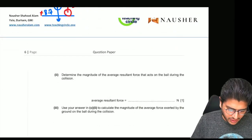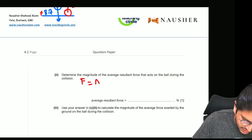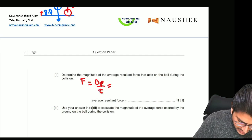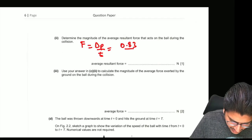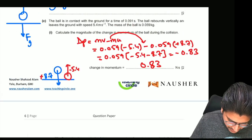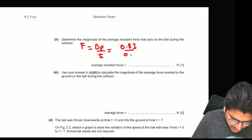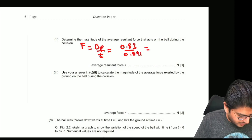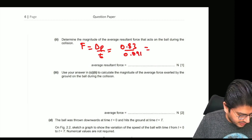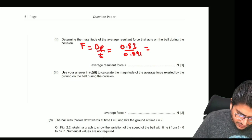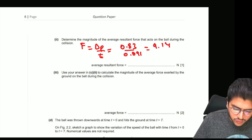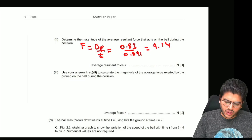What is the magnitude of the average resultant force? Average resultant force is rate of change of momentum, so the change in momentum is 0.83, and the time that it took was 0.091 seconds. Divide 0.83 by 0.091, and the answer you get is 9.14 newtons. You can write that as 9.1 newtons.